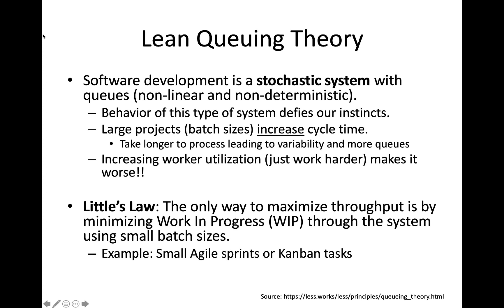What Little's Law tells us is that the only way to maximize throughput of work within our organization is to minimize work in progress — what we call WIP. If you've ever practiced a Kanban software development methodology, you'd be familiar with WIP. The only way to maximize throughput is by minimizing work in progress through the system, by using small batch sizes. This is the primary reason why agile software development methodologies are really popular in organizations today — because they actually improve the throughput of work through the system.